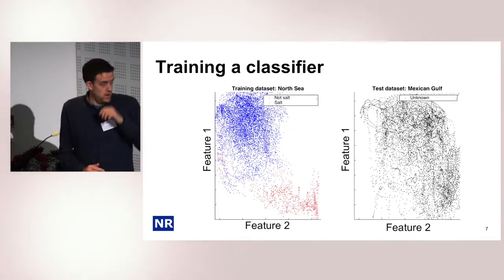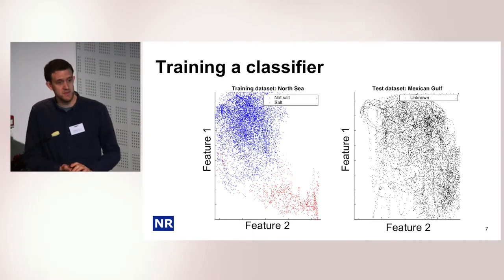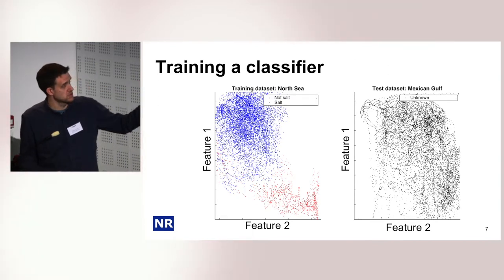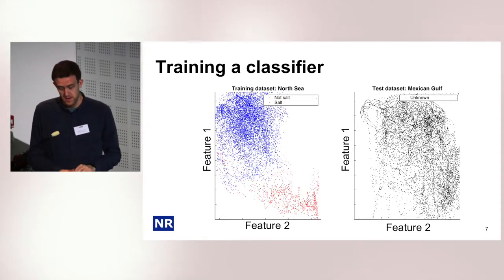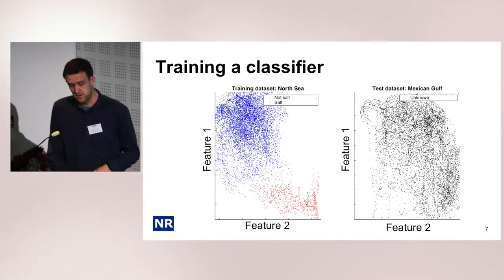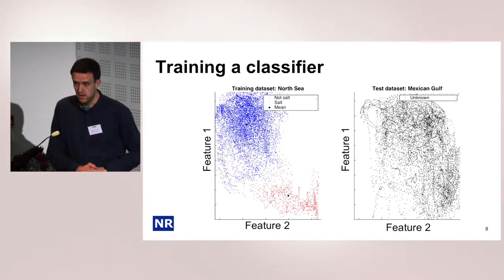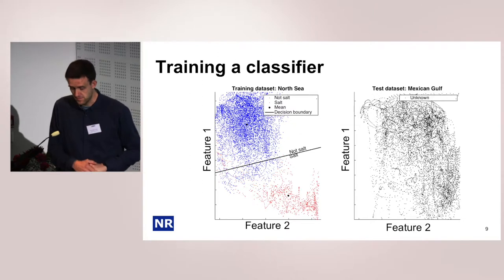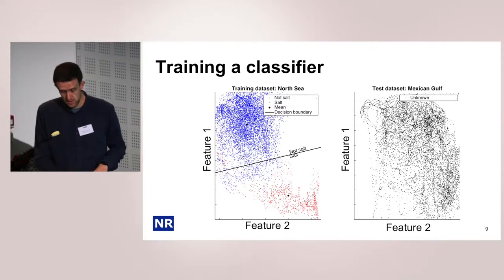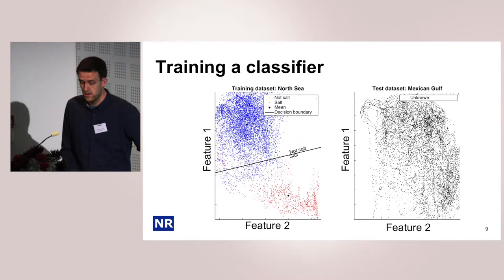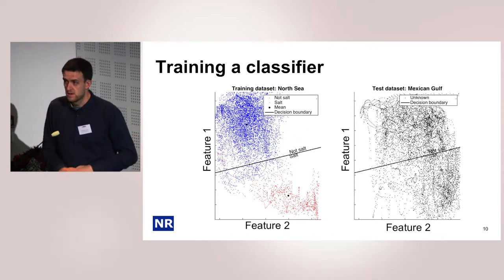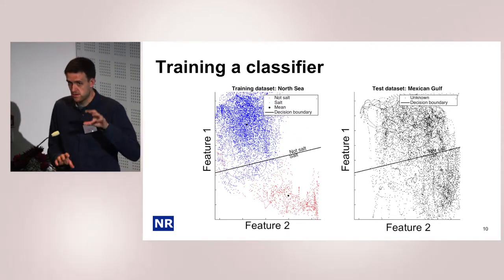When we're training a classifier, the goal is just to draw a line between these two clusters. The simplest classifier I can think of is to estimate the mean values of each cluster and then draw a straight line between them. We can then use this classifier on the other data set to separate salt and not salt.